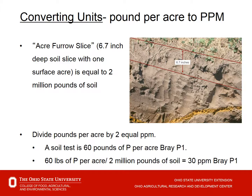When we talk about converting units, there is a very easy way to get back and forth between pounds per acre and parts per million. An acre furrow slice — a slice of soil at plow layer depth, about 6.7 inches — weighs about 2 million pounds of soil over a surface acre. Since parts per million represents 1 million, a quick division by 2 gets us there. For example, if we have a soil test reported as 60 pounds of P per acre, dividing by 2 gives us a 30 parts per million soil test.